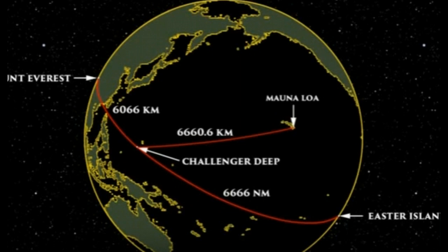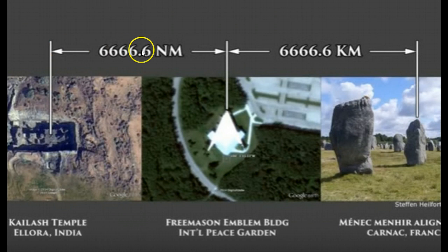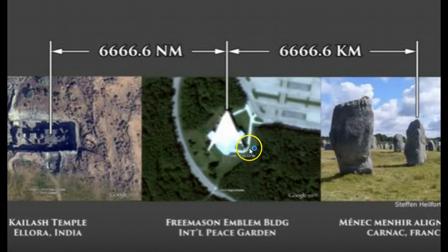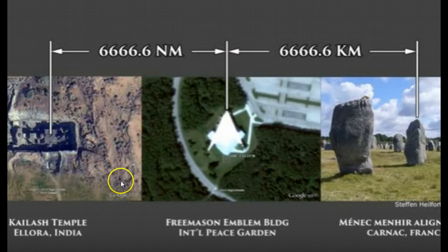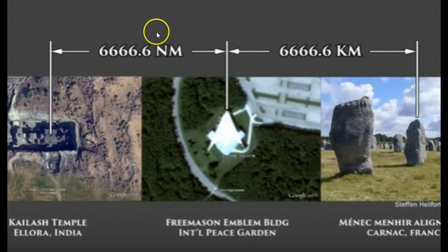It's not just that number — it's other numbers as well. Yet another example here: you can see their signature with their Masonic building, which from the ground people can't tell what it is — you can only really see its Masonic logo from the air. The distance from there to a temple in India, and to a position in France, to these monoliths — you can see the number in those distances repeating between these places.